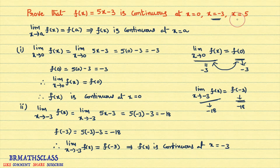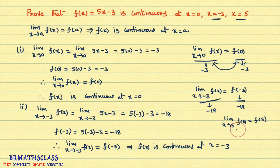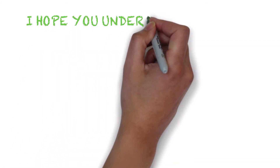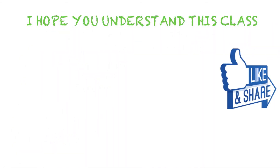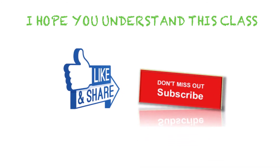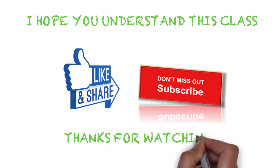Similarly, I want you to try the third part. When the function is continuous at x = 5, if limit as x tends to 5 of f(x) equals f(5), then the function is continuous at x = 5. Calculate both values — if they are the same, continuity is proved. At x = 5 also, the function is continuous when you try. I hope you understand this class. If you like this video, please share it with your friends, and subscribe to my YouTube channel. Thanks for watching. Have a great day. Bye-bye.